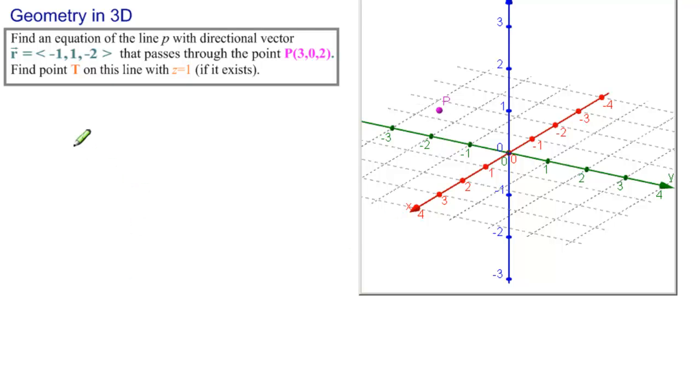Then let's draw the directional vector r. Let's first draw that point: minus 1, 1, minus 2, there it is.